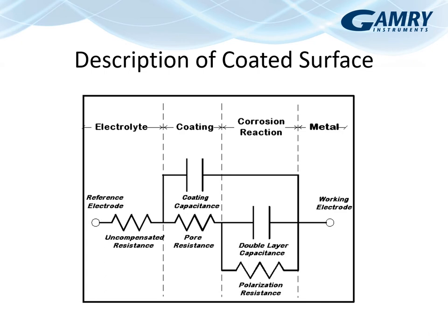This is the equivalent circuit model for a coated surface — the standard model. There is R_u, then two CPEs substituting for the two capacitors. First we have our simplified Randles cell for the corrosion reaction: uncompensated resistance, a double-layer capacitance and polarization resistance in parallel. But to get to the corrosion reaction at the metal surface, electrolyte must pass through a coating, which adds two more circuit elements: a coating capacitance and a pore resistance.